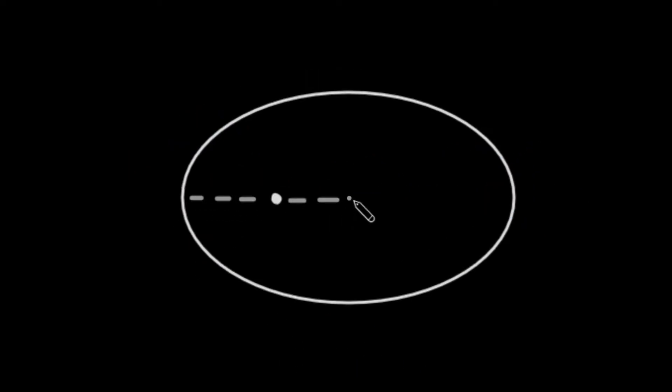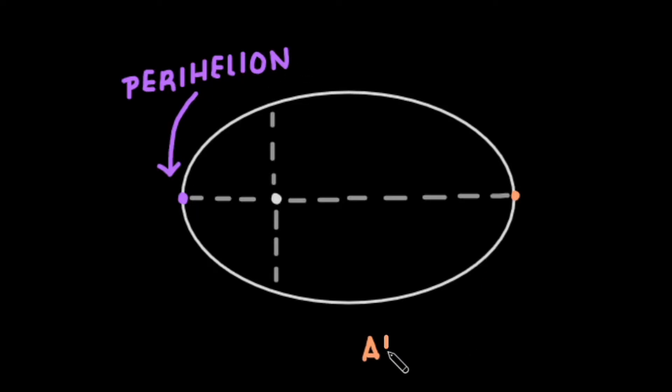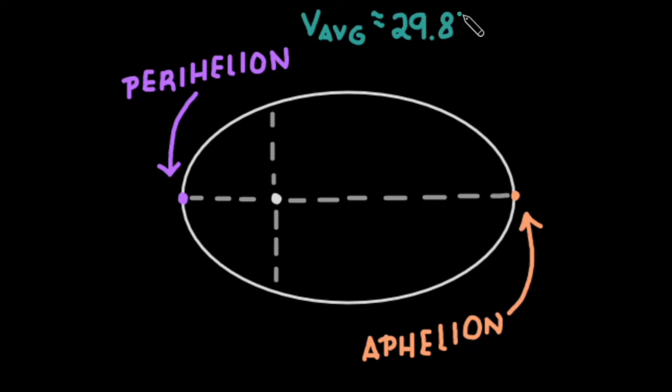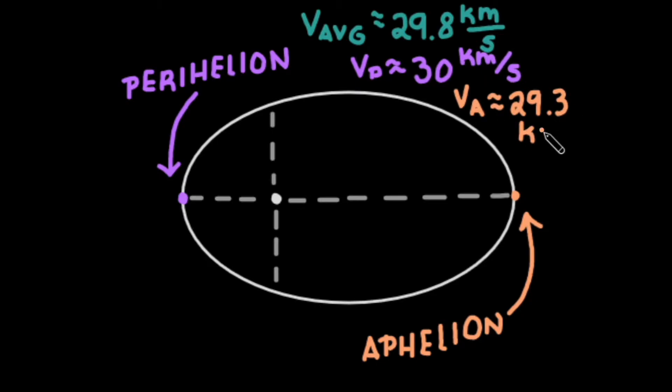This means that an object at perihelion, the closest point to an orbit's focus, is faster than when it's at aphelion, the farthest point from the orbit's focus. Earth, for example, travels at an average velocity of 29.8 km per second. However, it travels at the faster rate of 30 km per second at perihelion and the slower rate of 29.3 km per second at aphelion to meet the equal areas requirement.